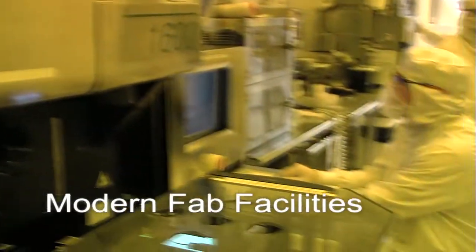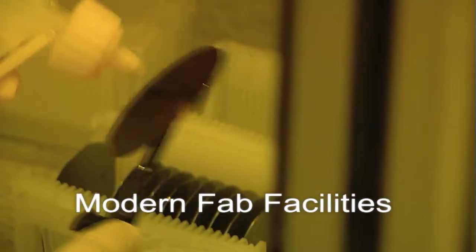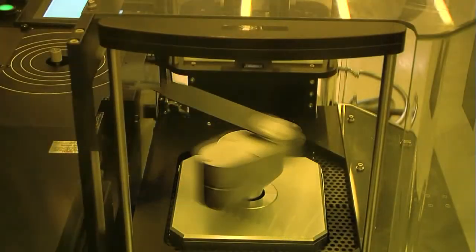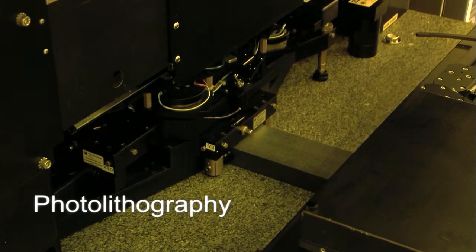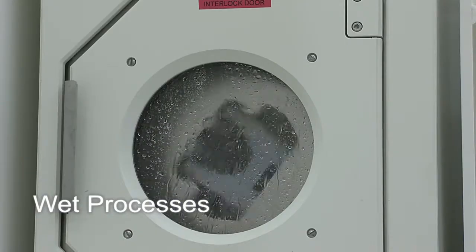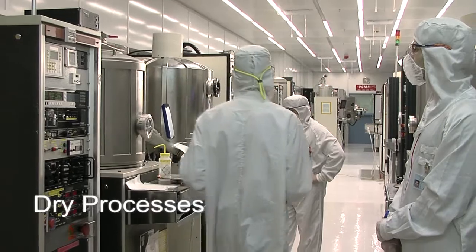At the company's state-of-the-art fab facilities, under the most stringent clean room conditions, the vertically integrated production line commences with wafer and bar processing, including automated photolithography, etching, vaporization, and inspection of the laser wafers.